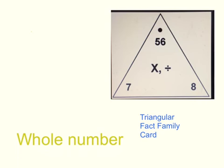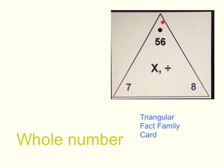There's some terminology we need to know in order to be successful with related facts. One of them is our triangular fact family card — that's this card right here. It's called a triangular fact family card because it's in the shape of a triangle. It's a lot like our addition and subtraction fact family cards, only at the top instead of being a sum, the top contains the product or the dividend if we're looking at multiplication or division sentences. Then to the left and right we have our factors if we're dealing with multiplication, or we have our divisor and our quotient, or vice versa.